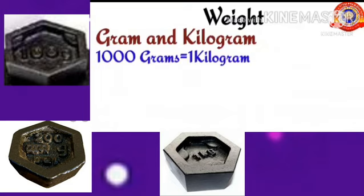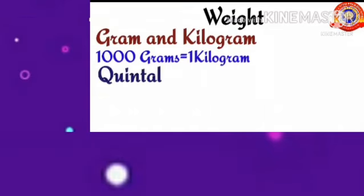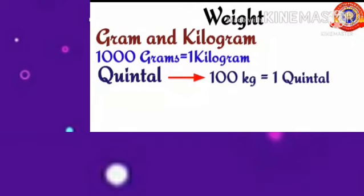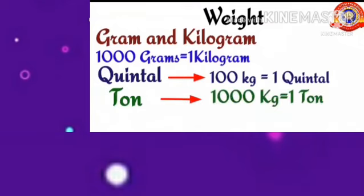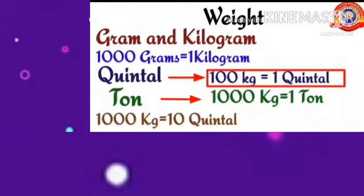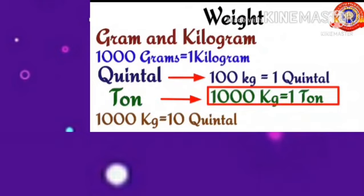One thousand grams make one kilogram. There is also another unit which is bigger than kilogram — that unit is called quindle. One hundred kilograms make one quindle. There is also a larger unit of weight called ton. One thousand kilograms make one ton. Therefore, ten quindles also make one ton.